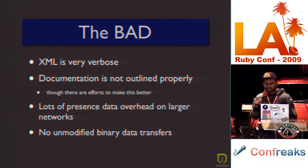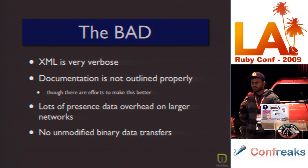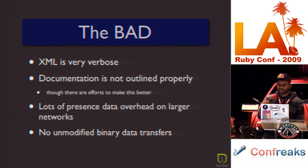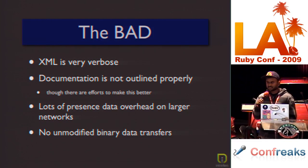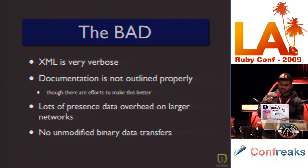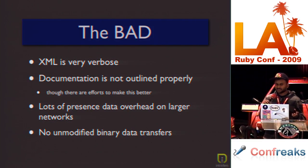The bad news: the XML is very verbose. Some people call it over-engineered. The documentation is readable and it's there, but it's not organized properly — most people who wrote it focus more on specifications than teaching people how to use it. But there are efforts to make it better. On larger networks, since presence is very important, there's a lot of data overhead just sending around presence data. Also, you can't send unmodified binary file transfers because everything is in XML, so they're usually encoded using Base64 before sending.